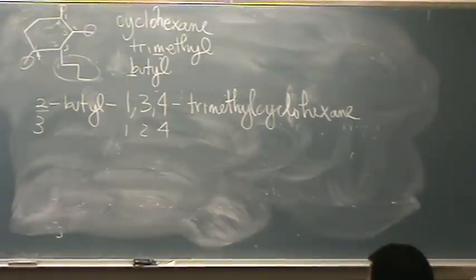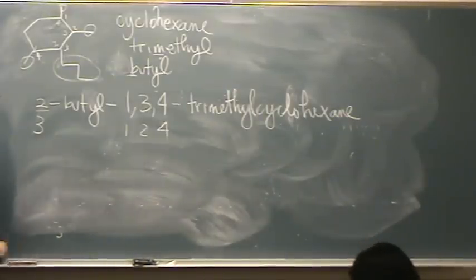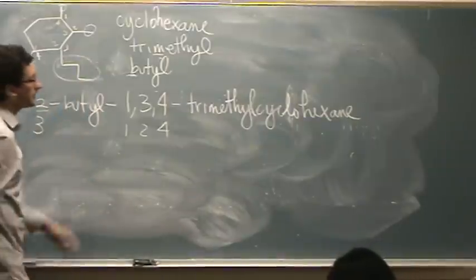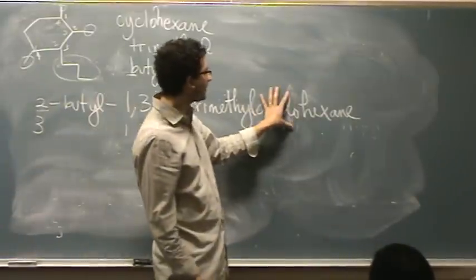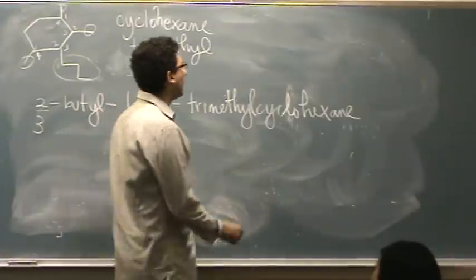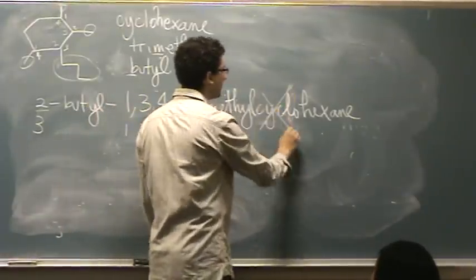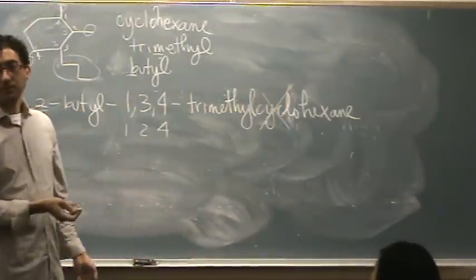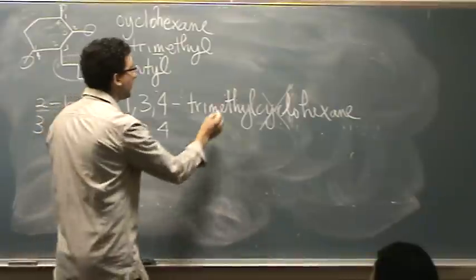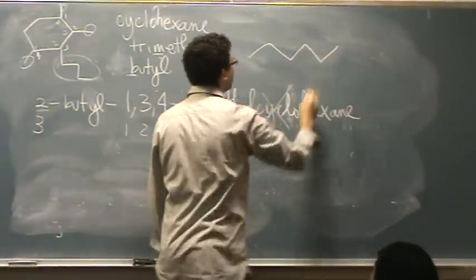Okay? So it's 2,1,3,4 instead of 3,1,1,2. So, know they're the same numbers. Yeah? So whenever it's a ring, it's a cyclo? Yeah, whenever it's a ring, you have to put cyclo here. If you didn't, if you didn't have this, what would it be? Well, you'd have a hexane as the main chain.